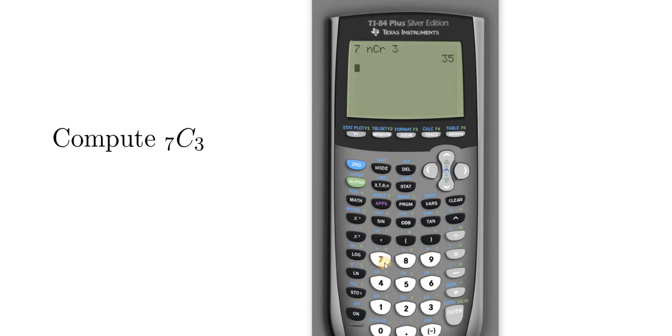Let's do it again. So first you hit 7. Then you hit math. Then you go over to PRB. Go down to NCR. Hit enter. Hit 3. And hit enter. And that's it.